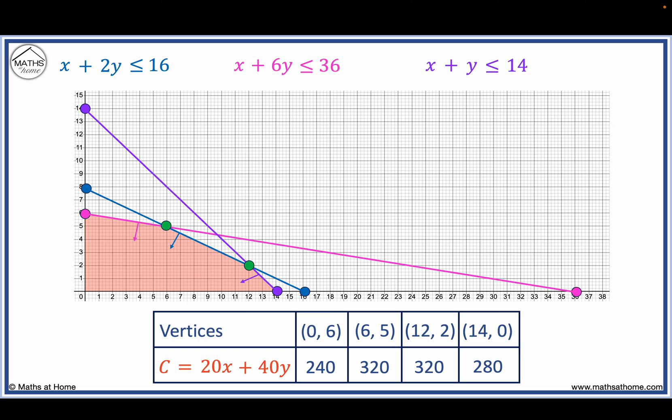We can see that there are two optimal solutions with the largest profit of 320. These are shown with the red coordinates on the graph.